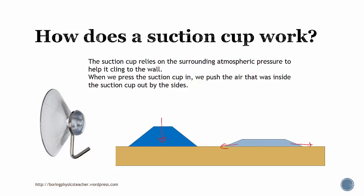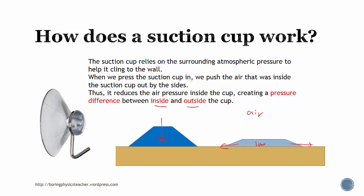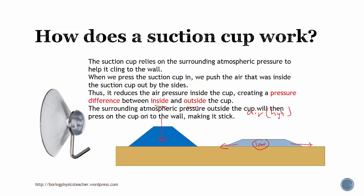There's actually less air inside, and less air means the pressure inside is very low, creating a pressure difference between inside and outside the cup. The surrounding is air, but as you squeeze the air out, you create a low pressure inside. Over here, this is relatively higher pressure. So the atmospheric pressure outside the cup would then press onto the suction cup, causing it to stick to the wall. That's how a suction cup works.